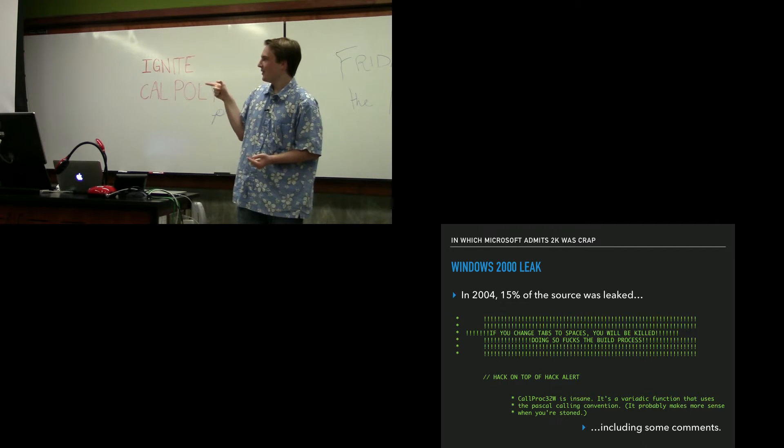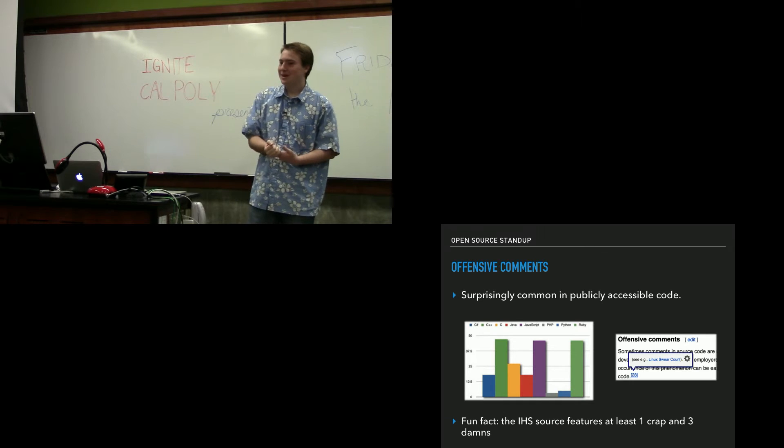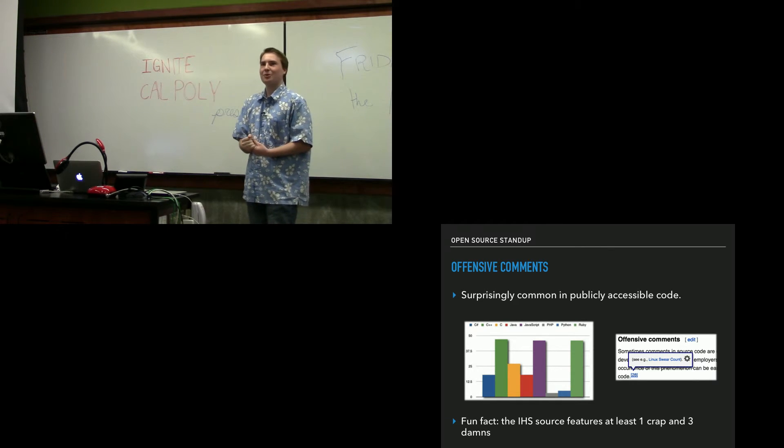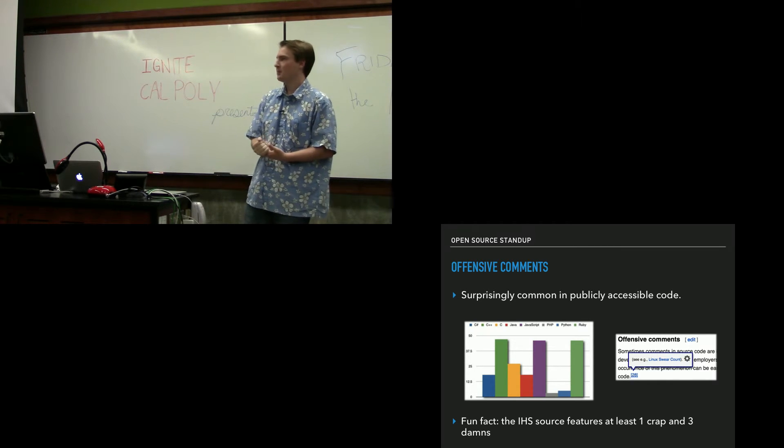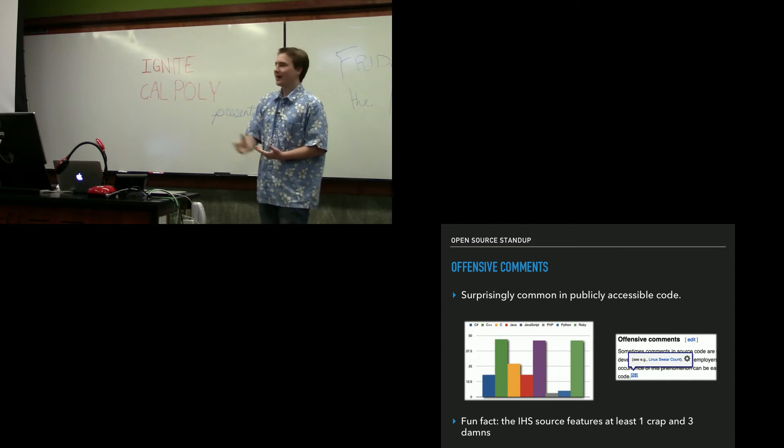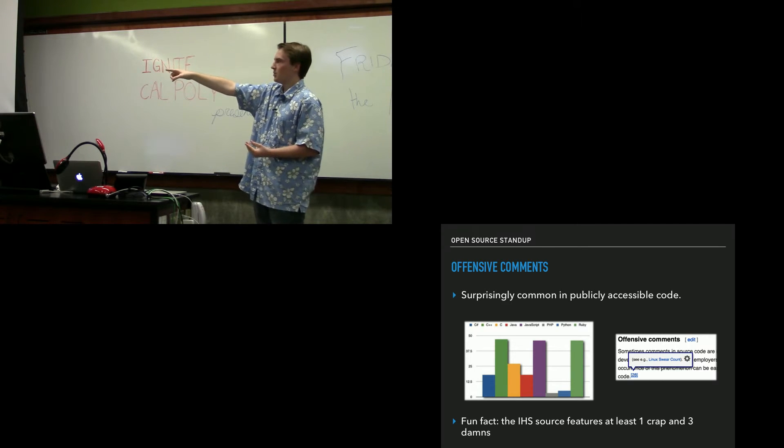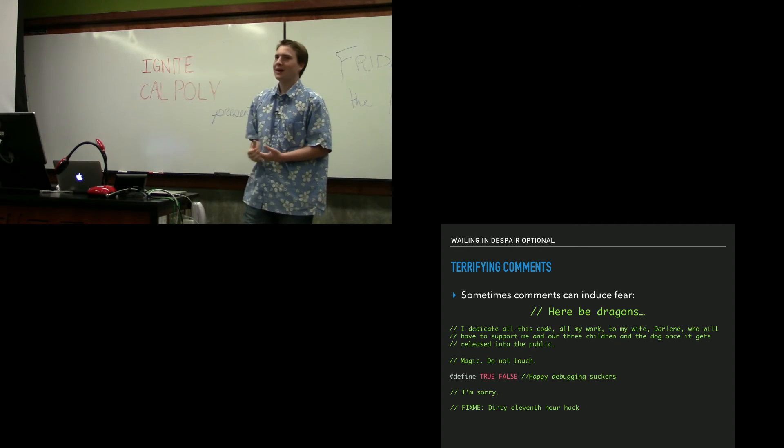They call themselves morons a lot. This is actually pretty common. Programmers get frustrated. We write late at night. The Wikipedia page for offensive comments links to a number of swear words in an operating system called Linux. It's publicly available. That graph is of curse words in git commits and git code. Those are pretty fun.